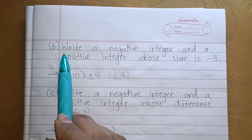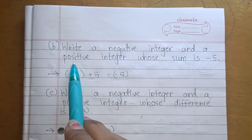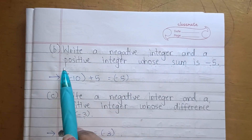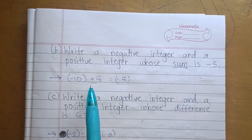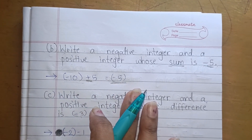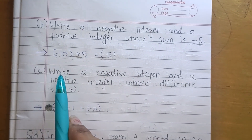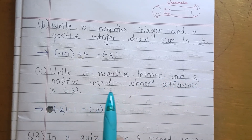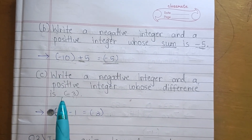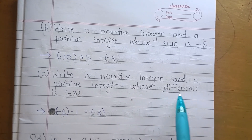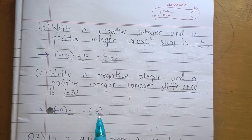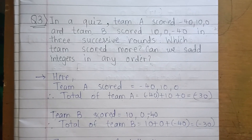Question 2b: write a negative integer and a positive integer whose sum is minus 5. So take minus 10 and plus 5 — sum means addition — minus 10 plus 5 equals minus 5. Question 2c: write a negative integer and a positive integer whose difference is minus 3. Difference means subtraction: minus 2 minus 1 equals minus 3.